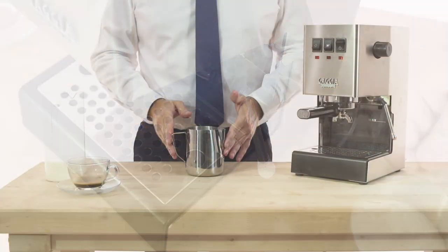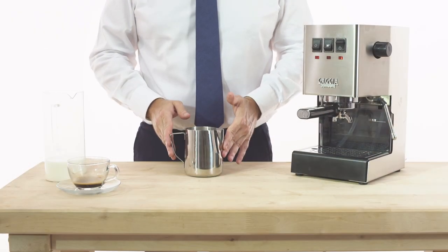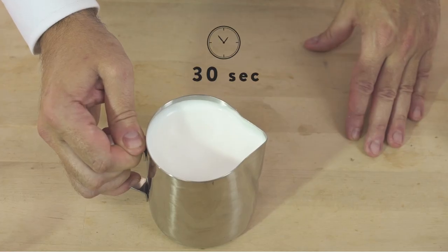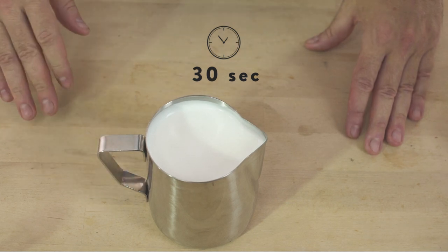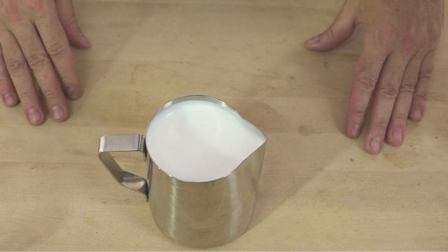Once you have finished frothing the milk, we suggest to gently pound the jug on the counter and let it rest for at least 30 seconds. The result is textured, velvety, and smooth.